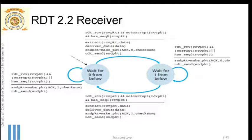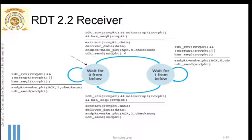If the received packet is not corrupted and has sequence number zero, the receiver extracts the data, delivers it to the application layer, and creates a positive acknowledgement. Importantly, a sequence number zero is added to this acknowledgement — this is new compared to RDT 2.1 — along with a checksum, and it is sent back.